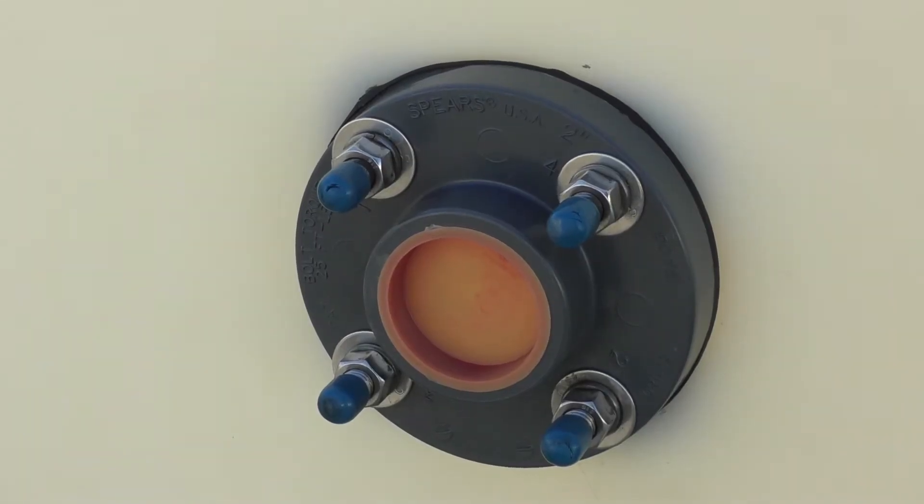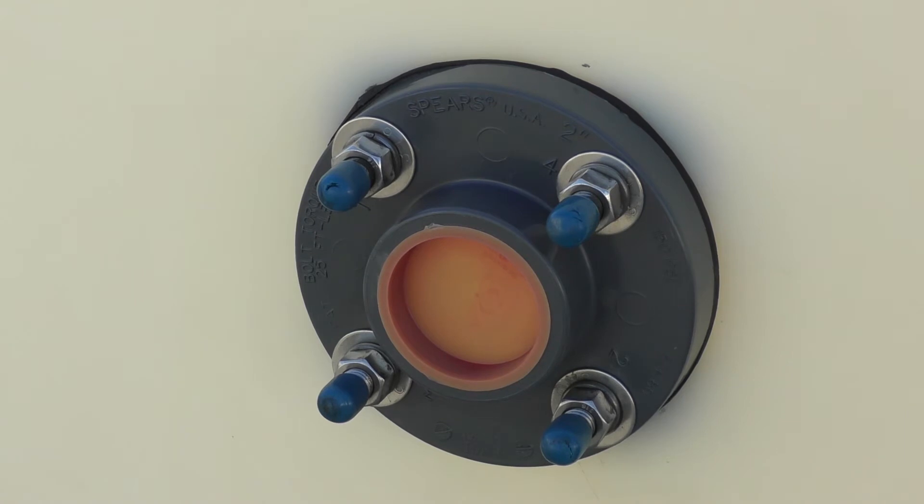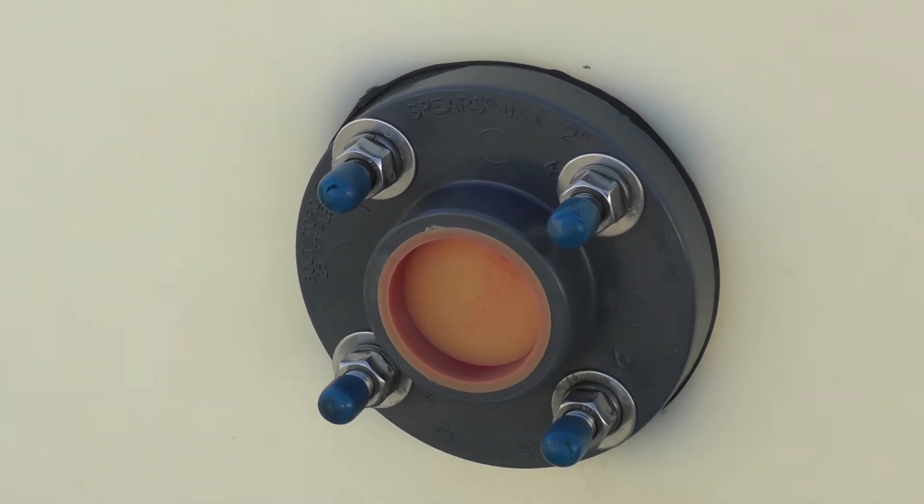This is a 2-inch PVC bolted flange fitting. These fittings are available in standard sizes up to 6 inches and can be installed using titanium, C276, as well as stainless steel bolts as shown here.